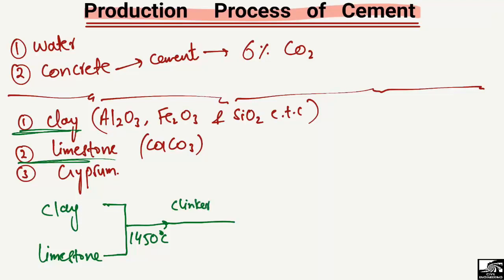Clinker is basically small particles which are a combination of clay and limestone. After the clinker is formed, we cool it down — it goes through a cooling process. After cooling, another material is added, which is gypsum.